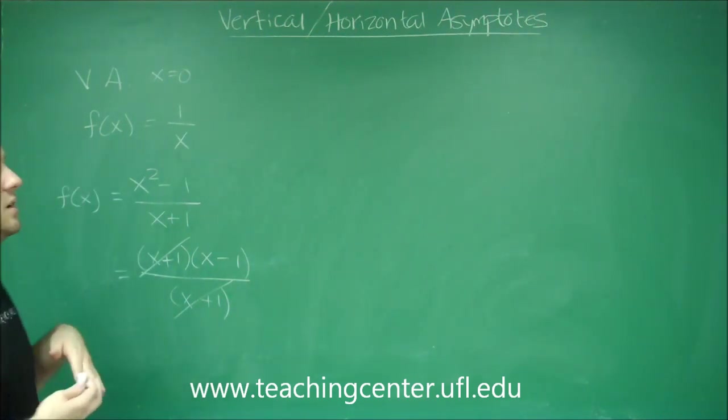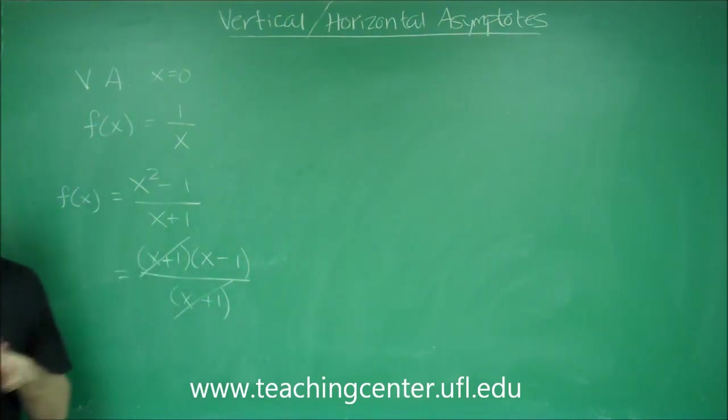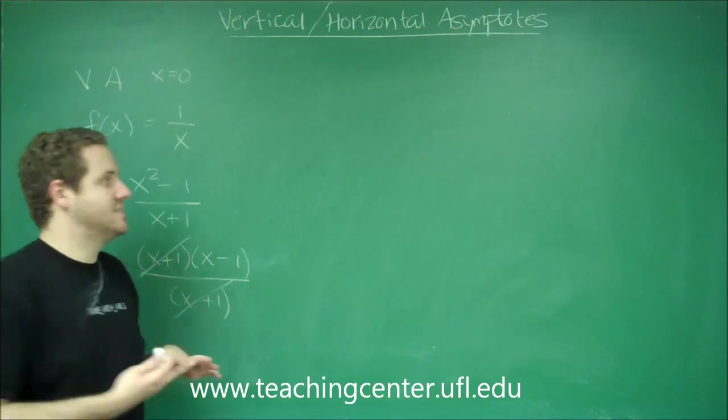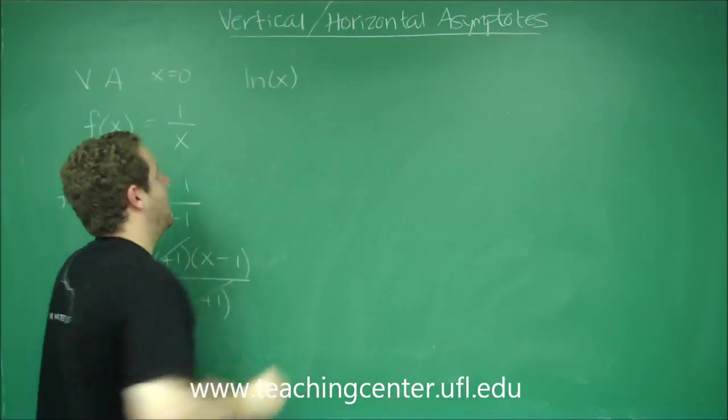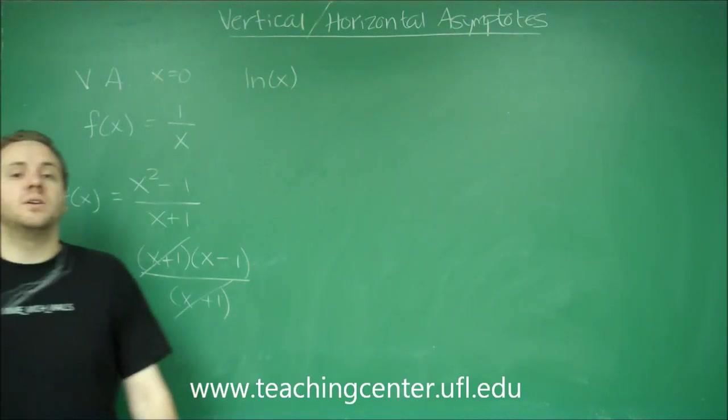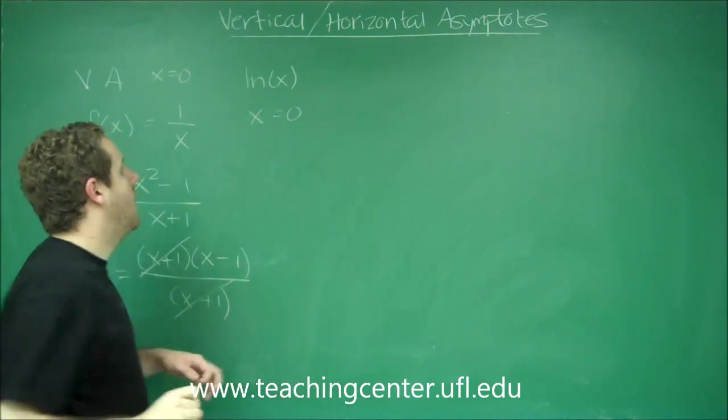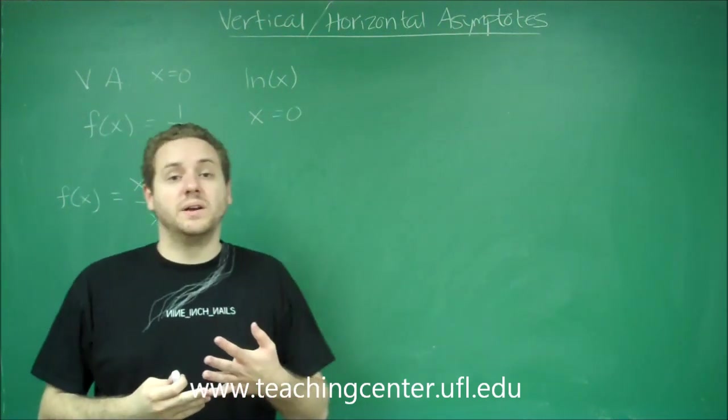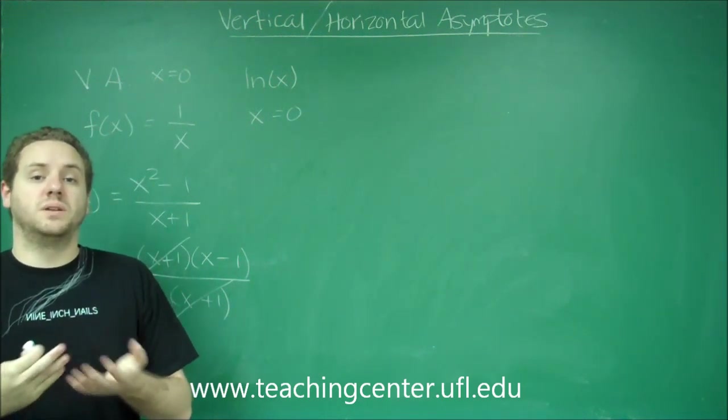There's a couple other functions that just have vertical asymptotes you're going to need to know. Actually, just one that you're going to need to know. And that's the natural log function. ln of x has a vertical asymptote at x equals zero. And that's one that you just have to memorize or maybe memorize the graph shape. But the graphs of logs and exponentials are going to be in another video.